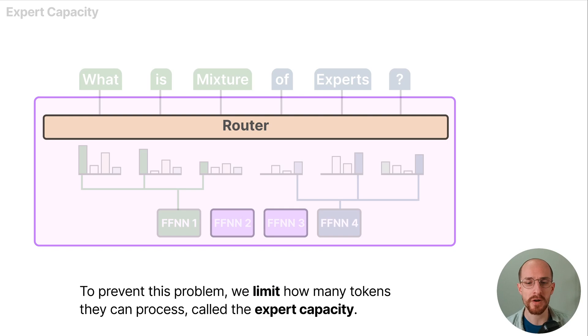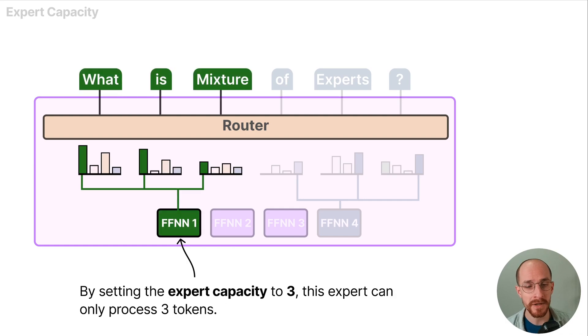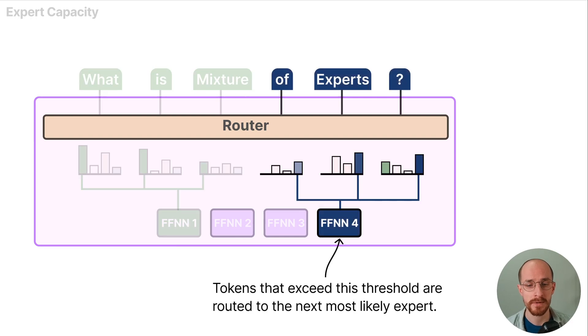To prevent this problem we limit how many tokens they can process, which we call the expert capacity. By setting the expert capacity to 3, this expert can only process 3 tokens. Tokens that exceed this threshold are routed to the next most likely expert, in this case expert 4.